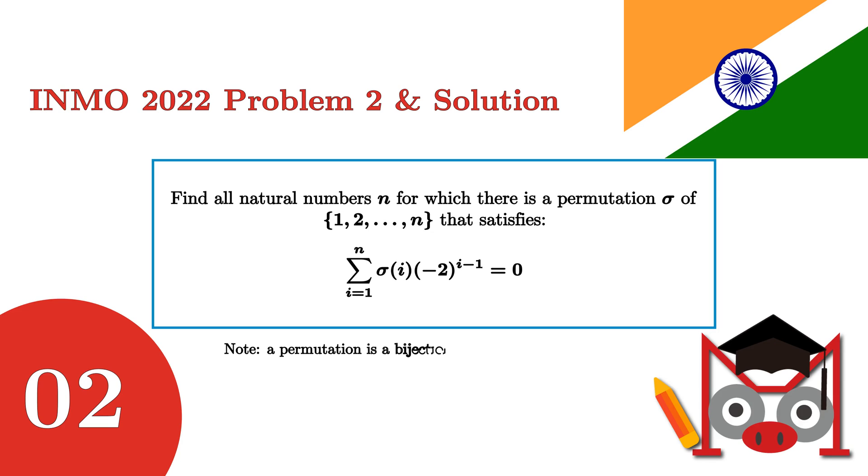The problem is to find all the integers n for which there is a permutation sigma of the set 1 to n such that the sum of sigma i multiplied by minus 2 to the power i equals 0.